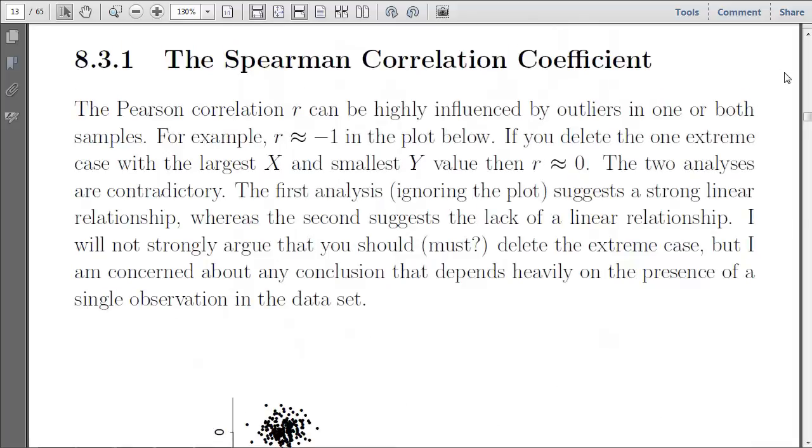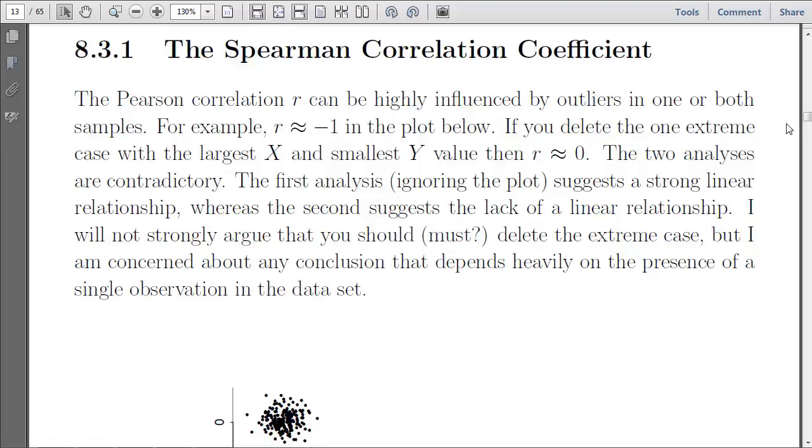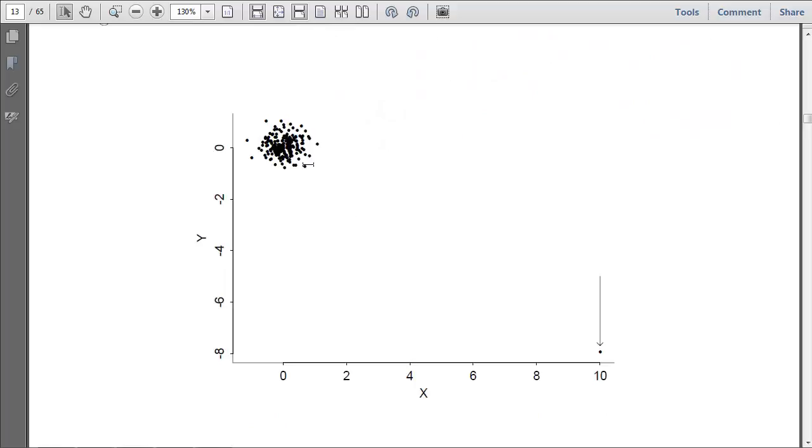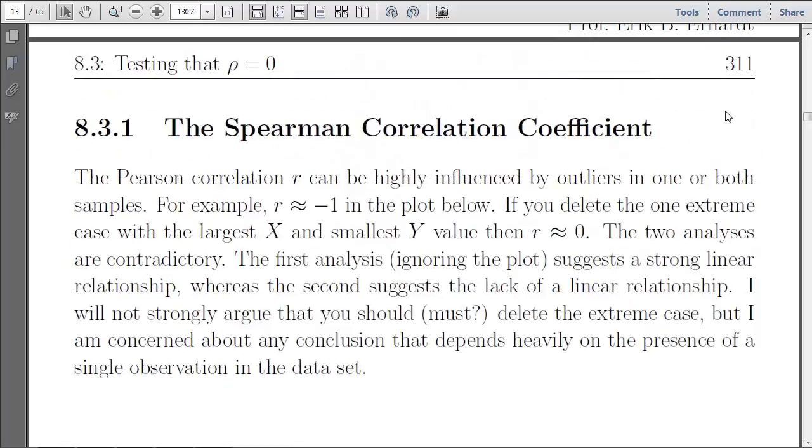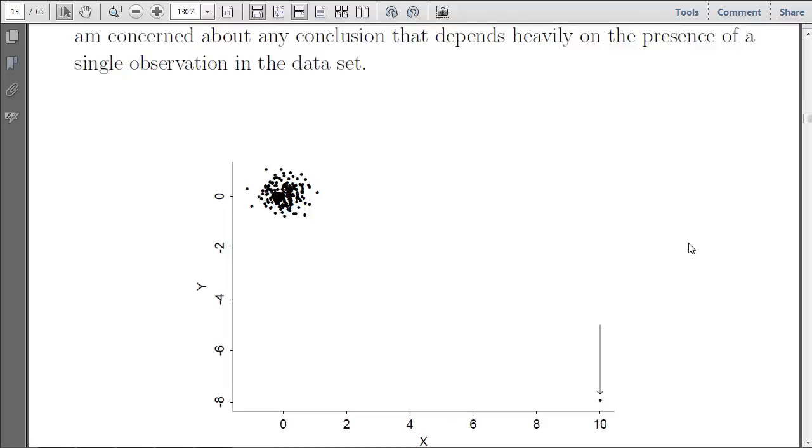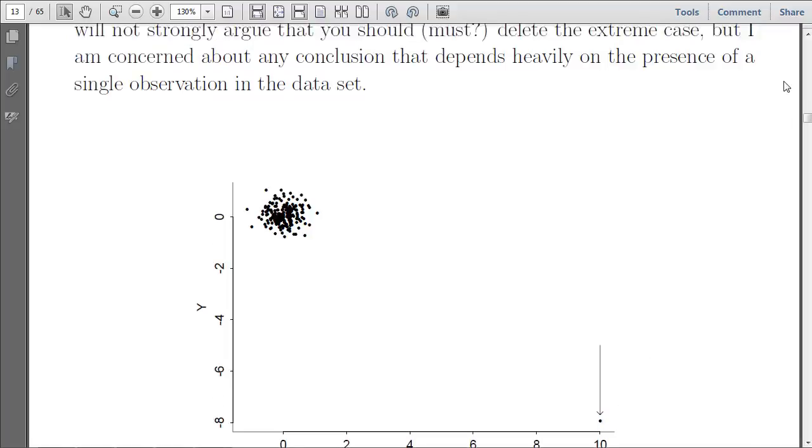There's another correlation coefficient, called the Spearman correlation coefficient, which does not require bivariate normality. Because the Pearson correlation can be highly influenced by outliers, just as a standard t-test would for a one-sample or two-sample test, for example, imagine we have this cloud of points in the top left, and then we have one extreme outlier. Imagine what the correlation is without the outlier. It's pretty much a horizontal line, so the correlation would be zero. But when you include this point, there's now this strong negative relationship. That would be a very strong relationship. Obviously, in this case, you probably want to investigate that point and possibly remove it as not being very representative.